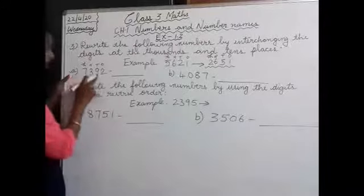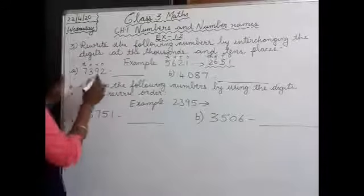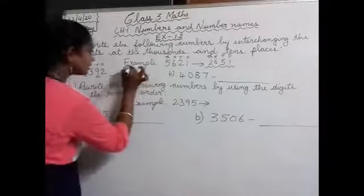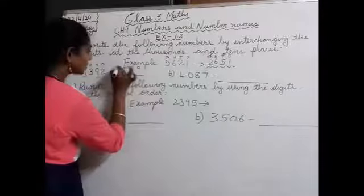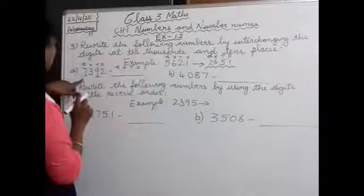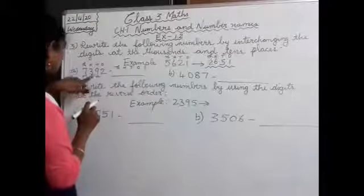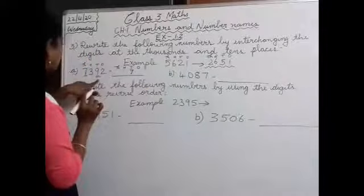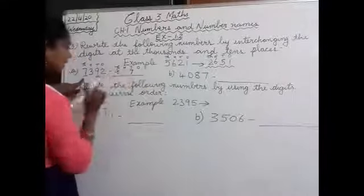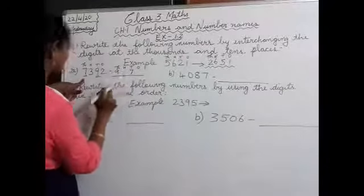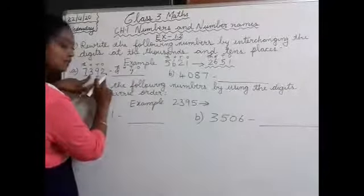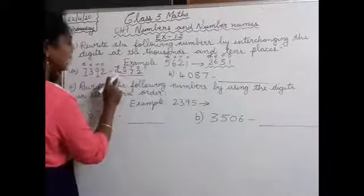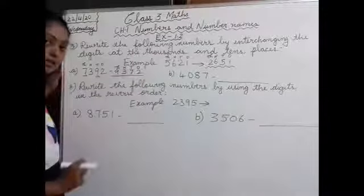Part K: 7392. We are going to interchange thousands place and tens place. Which number is in thousands place? 7. 7 will go to tens place. And 9 will go to thousands place. The hundreds place and ones place will be the same: 3 and 2. So the answer is 9372.